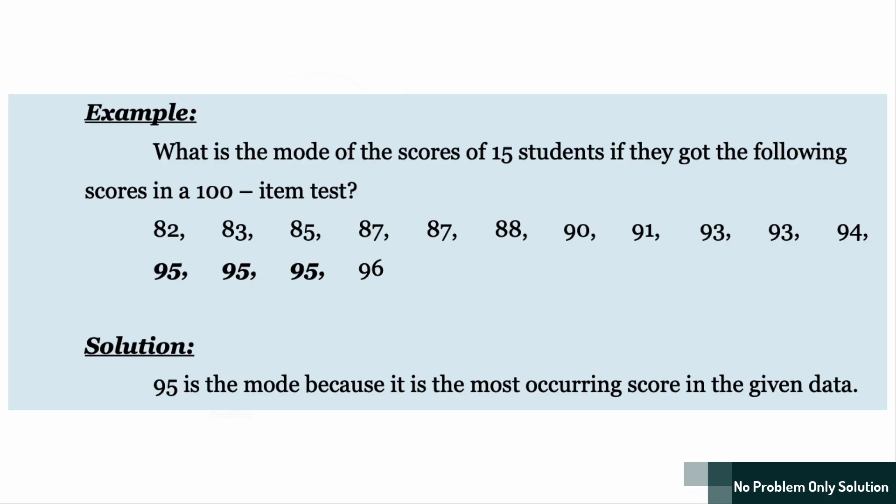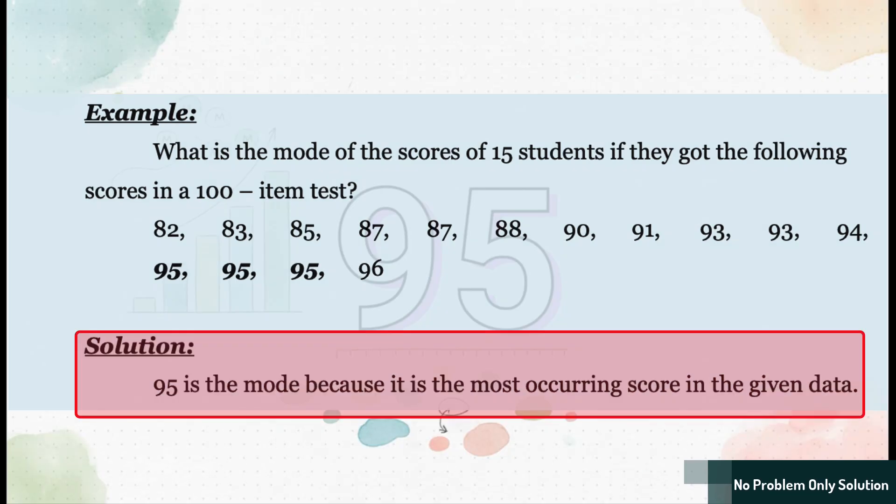So, let's try it out. Take a look at our list of scores here. Can you spot it? Which number shows up more than any other? Did you find it? If you landed on 95, you nailed it. The number 95 appears three times. Sure, 87 and 93 appear twice, but 95 beats them. So, our mode, the most frequent score is 95. See, pretty easy.